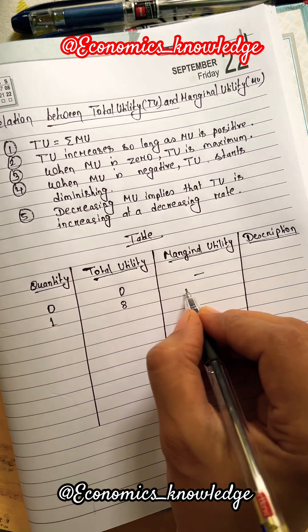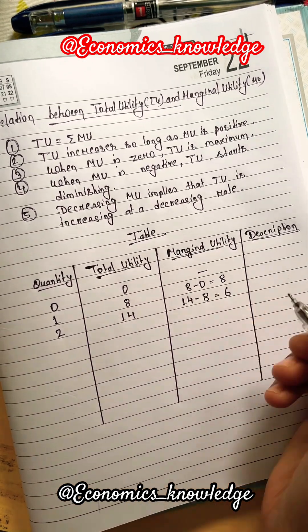When quantity is 0, total utility is also 0 and marginal utility is nil. When quantity is 1, total utility is 8.